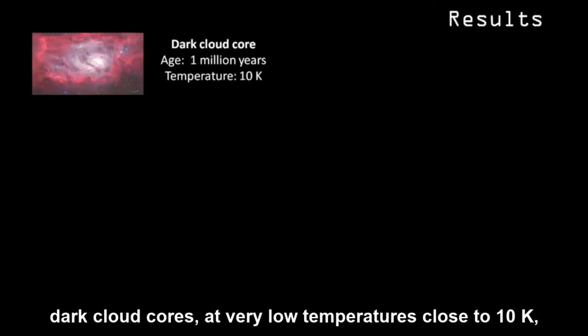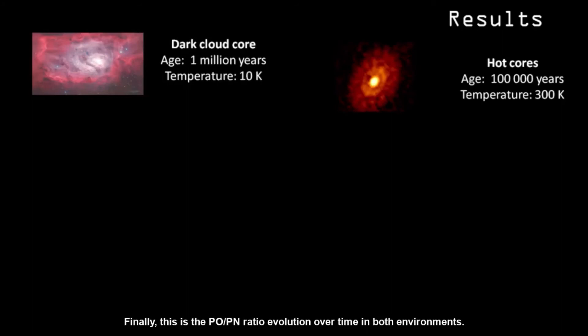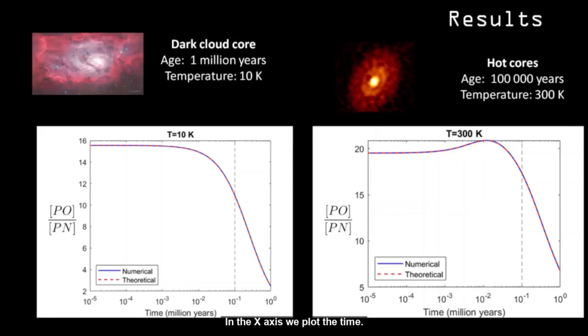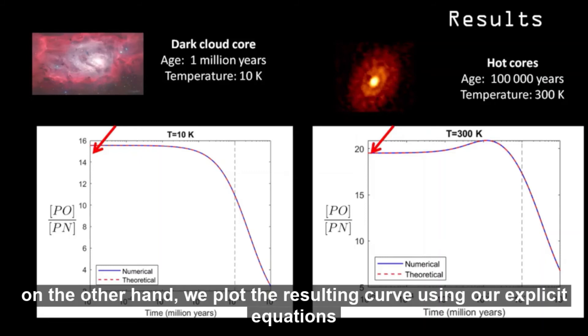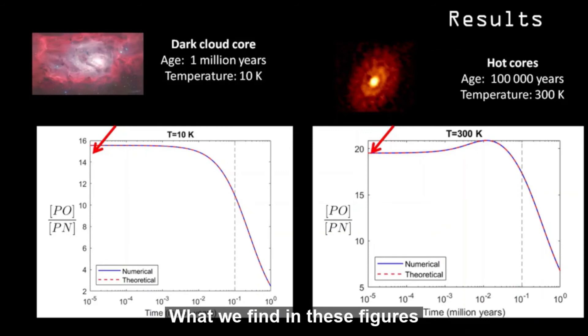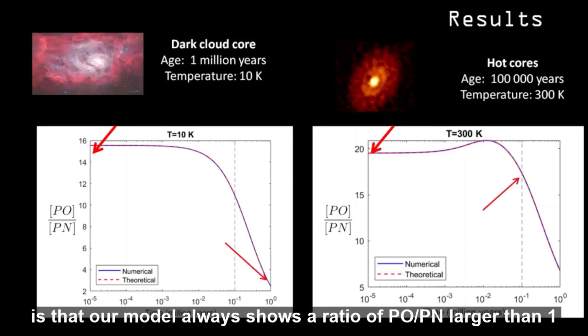We have tested our equations for two regions within molecular clouds. Dark cloud cores, at very low temperatures close to 10 Kelvin, and hot cores, at higher temperatures. So, finally, this is the PO-PN ratio evolution over time in both environments. In the x-axis, we plot the time. Along the y-axis, we see the fraction between PO and PN. On the one hand, we are representing the results coming from numerical methods, and on the other hand, we plot the resulting curve using our explicit equations. Despite the approximations applied, they match almost perfectly. What we find in these figures is that our model always shows a ratio of PO-PN larger than 1, so PO is always more abundant than PN in molecular clouds.